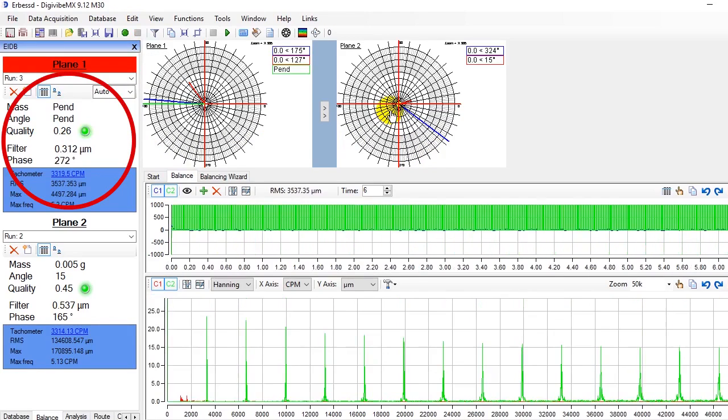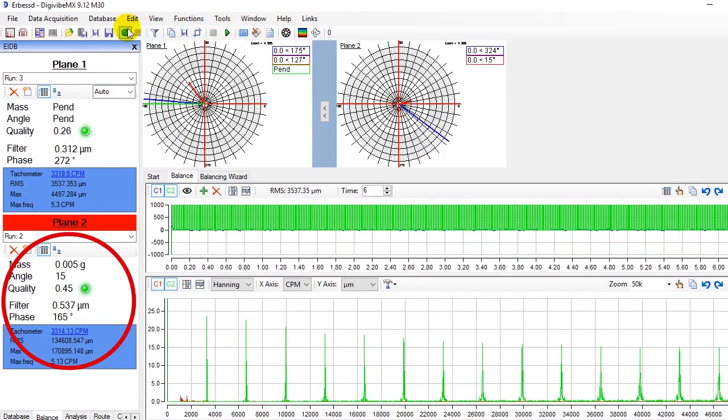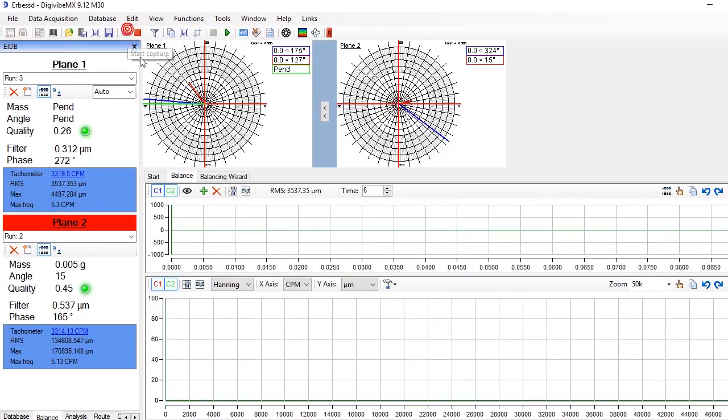Now both indicators are green, which means that we have reached the required quality grade. Now you can generate your balancing report going to tools.